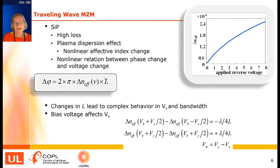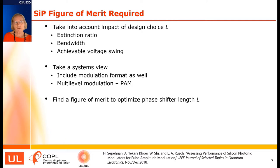The phase change we get from the modulator is also nonlinear in the applied voltage. Note that the phase change is related to the length L of the modulator, and when we try to change the modulator length, it has complex behavior affecting V_pi and the bandwidth of the modulator. The bias voltage we choose for operation also has an impact on V_pi, related to this nonlinear relationship between the effective index difference and the applied reverse voltage.